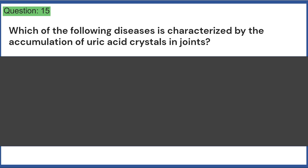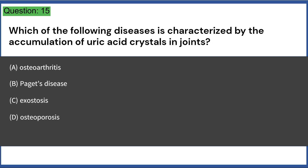Which of the following diseases is characterized by the accumulation of uric acid crystals in joints? A. Osteoarthritis, B. Paget's disease, C. Exostosis, D. Osteoporosis, E. Gout. Answer: E.